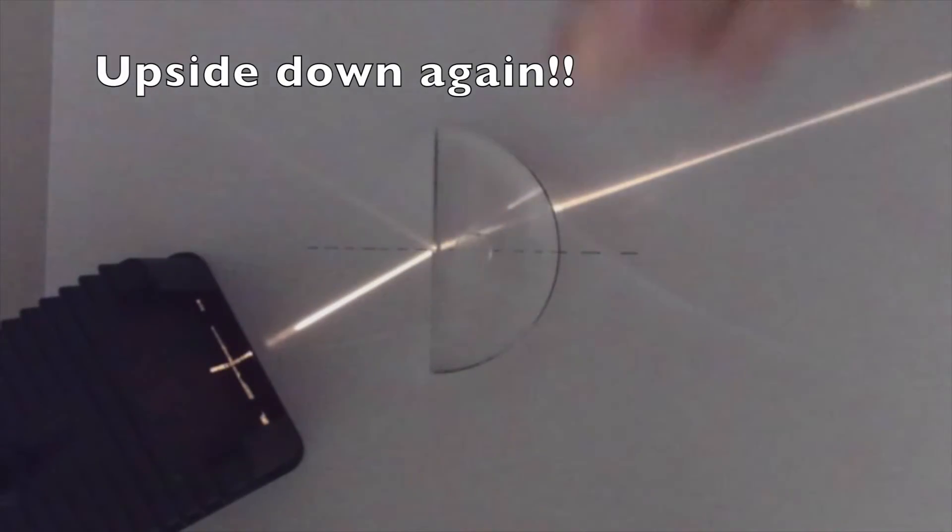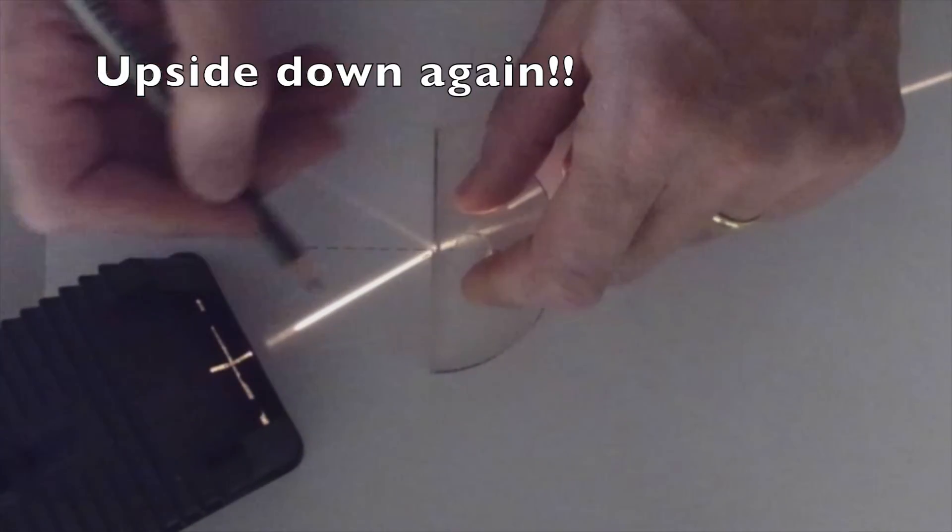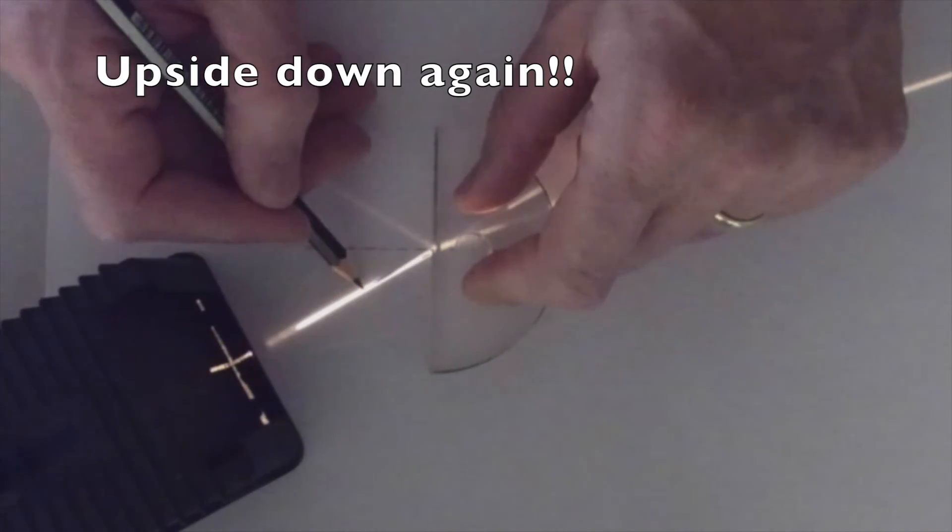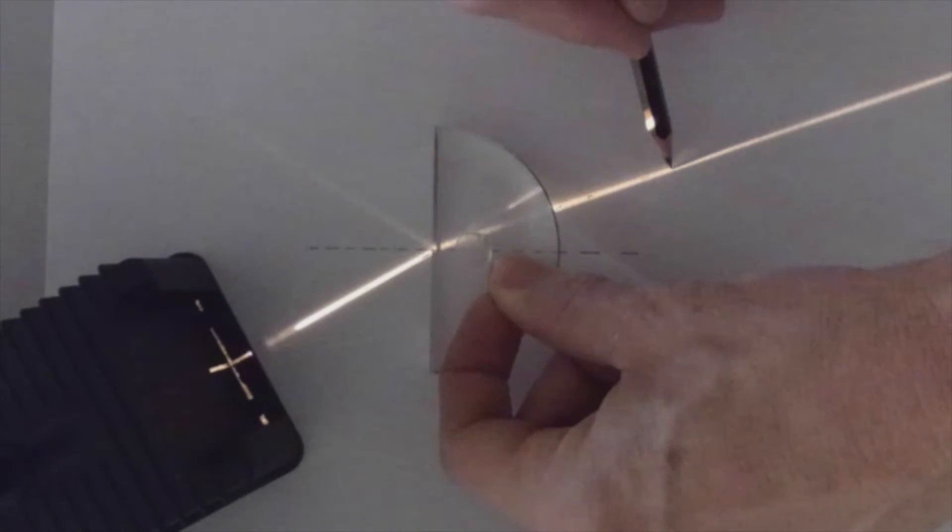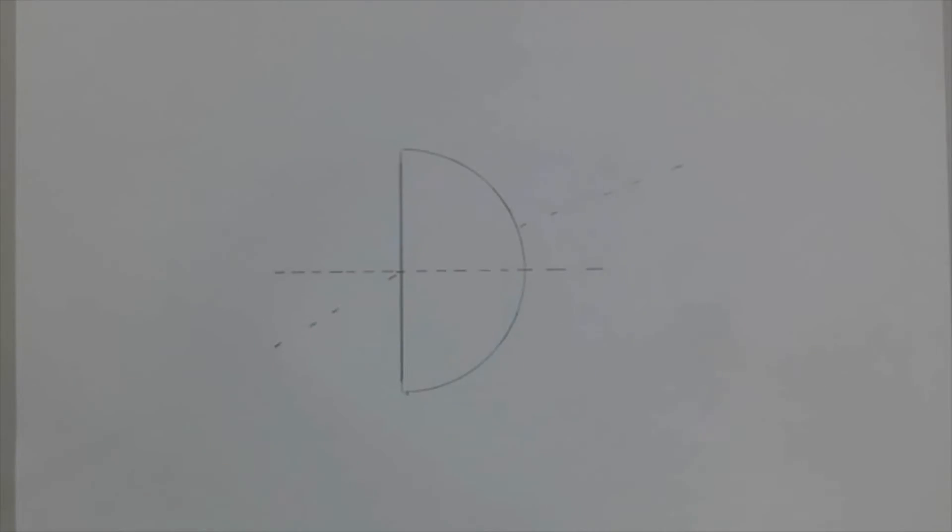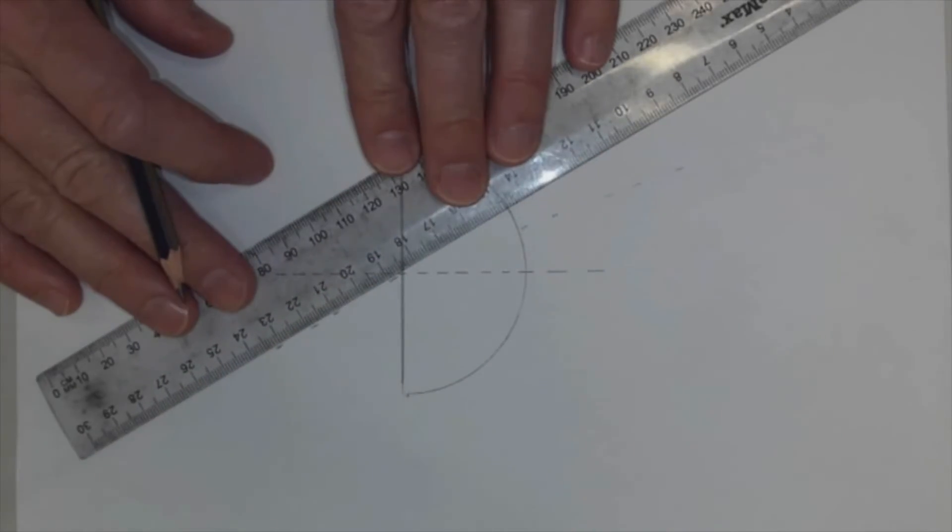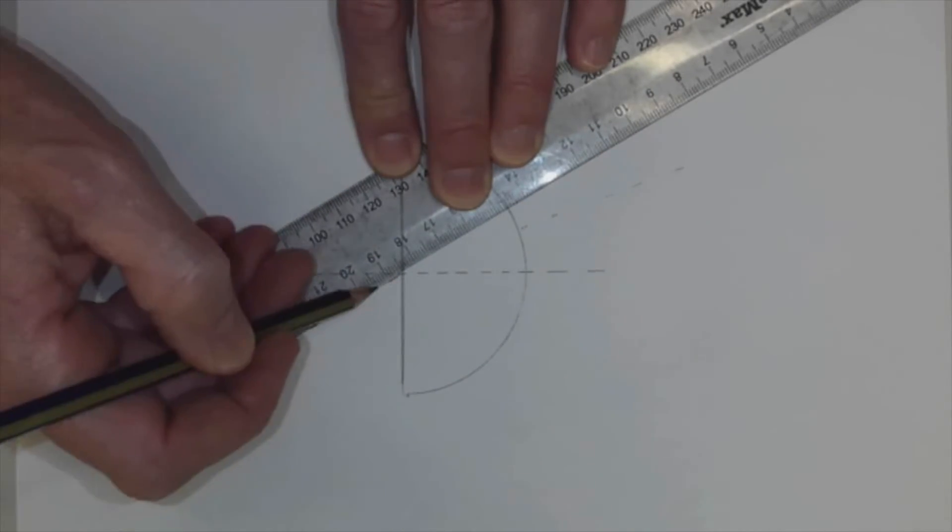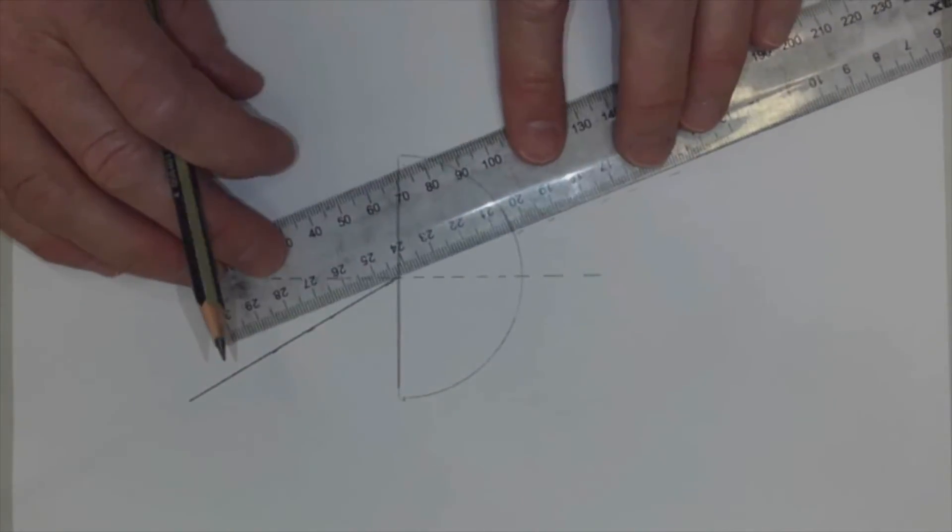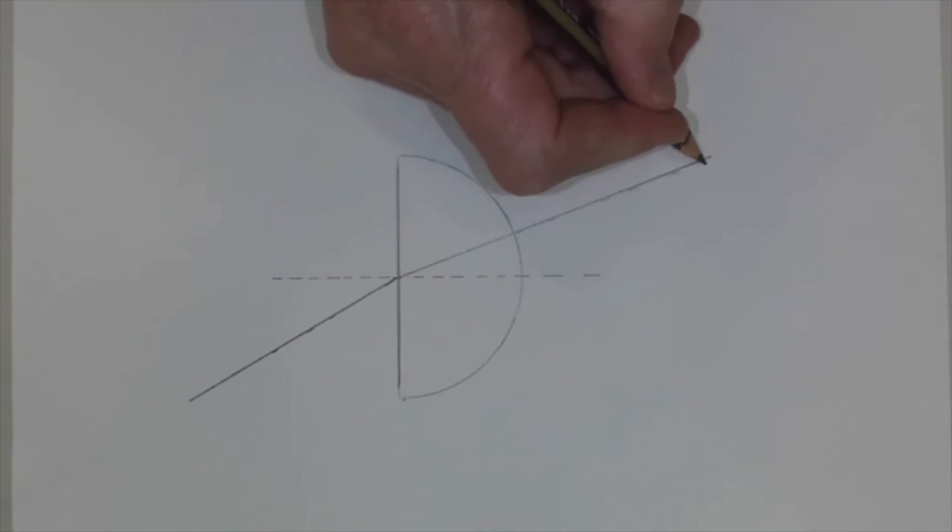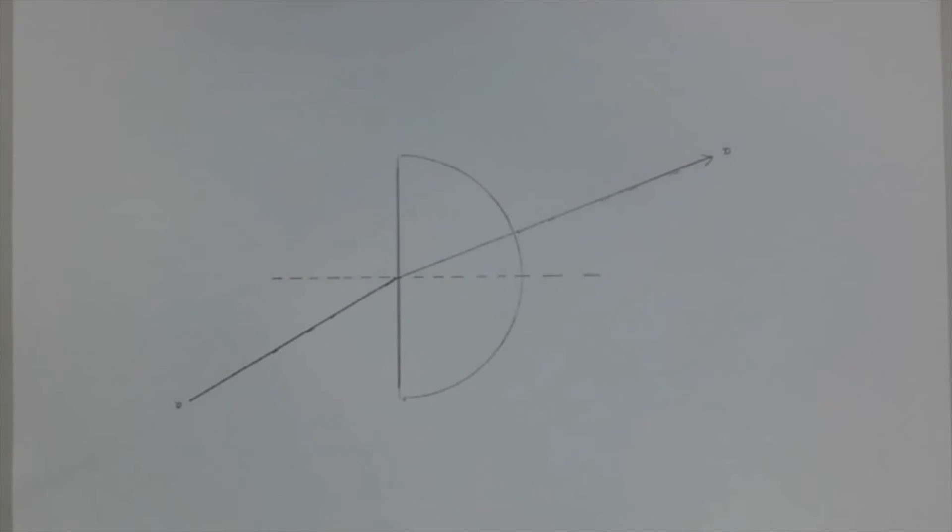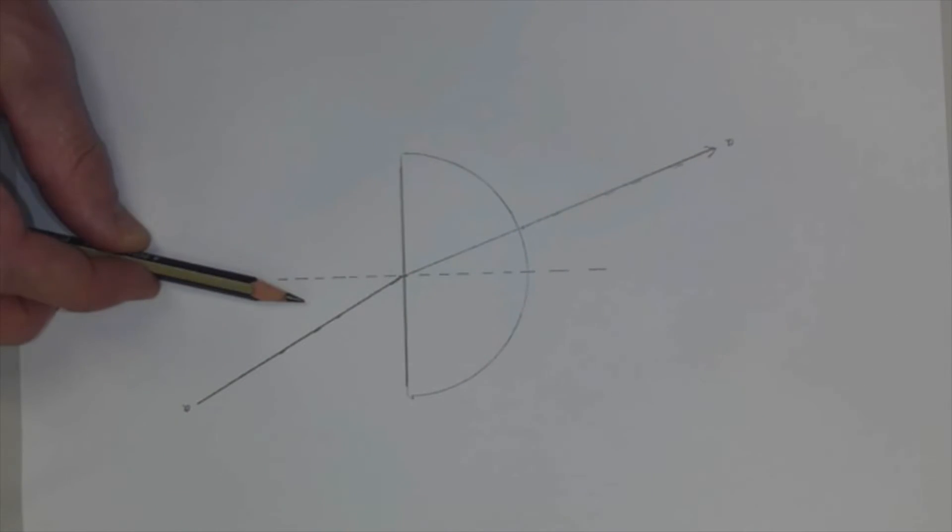When you're ready to make a recording, place little dots along the path of the incident ray and along the path of the refracted ray. Remove your prism, get a ruler and draw in your incident ray and draw in your refracted ray. Have the two lines meet where the normal line crosses over the flat side of the prism.